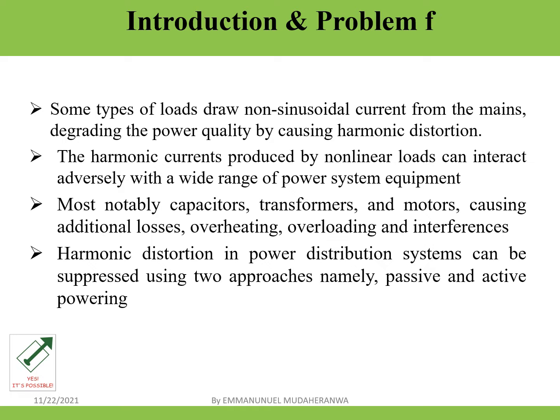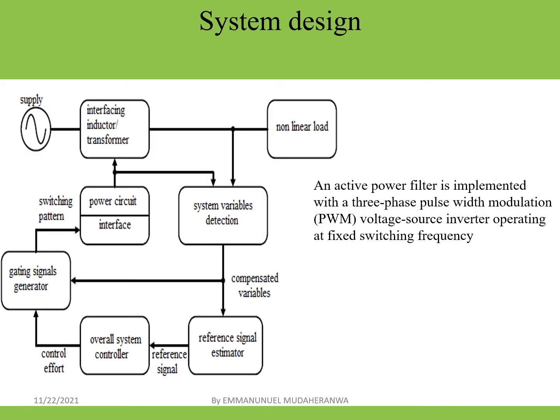This includes mostly capacitors, transformers, and motors, and this can cause additional losses, overheating, overloading, and interference. Harmonic distortion in power systems can be mitigated using two approaches, namely passive or active filtering.